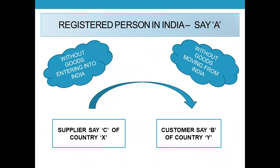For example, if A, a registered person in India, receives an order to supply goods to B in country Y, A finds a supplier, say C in country X, and asks him to supply the goods to B in country Y.